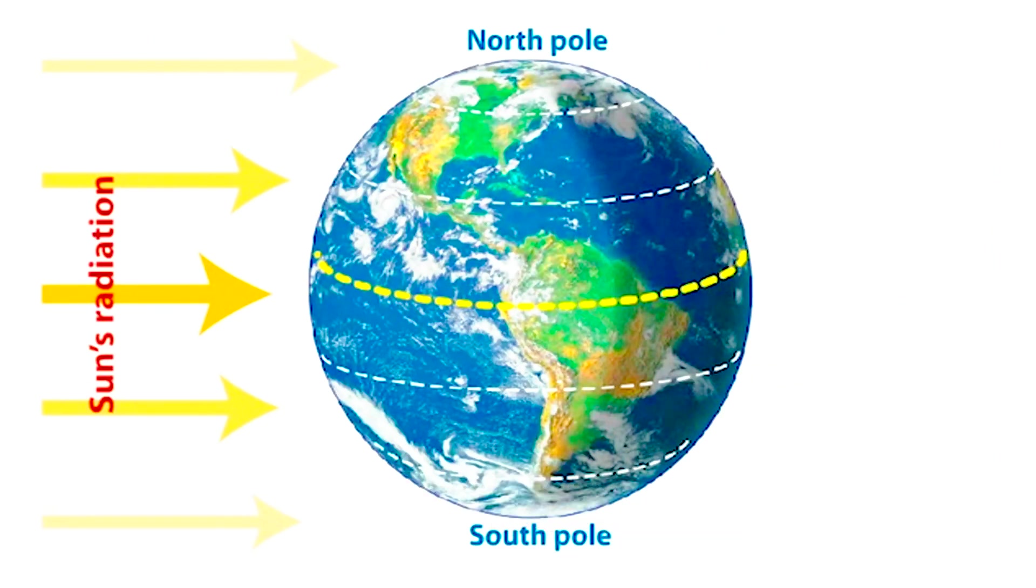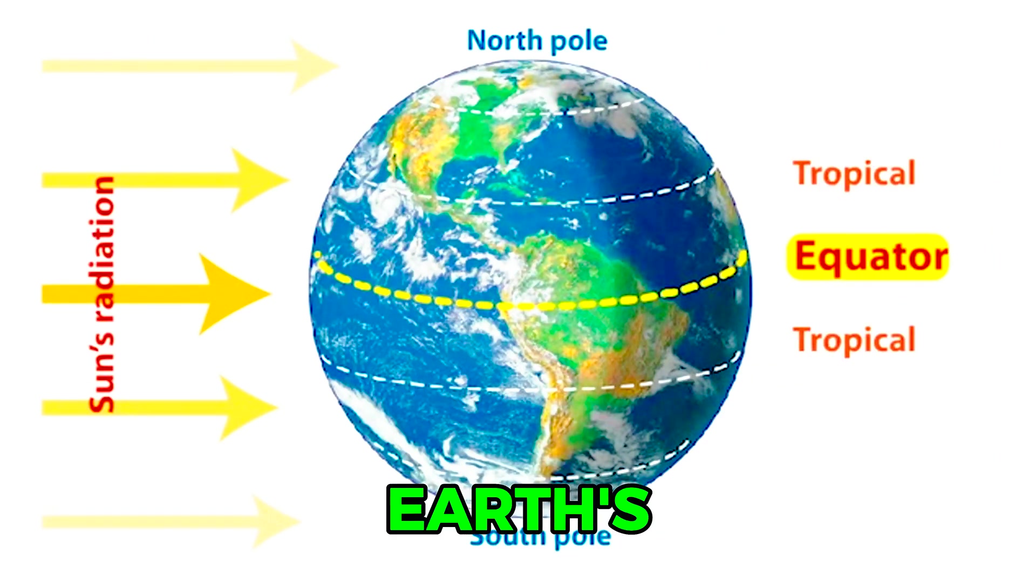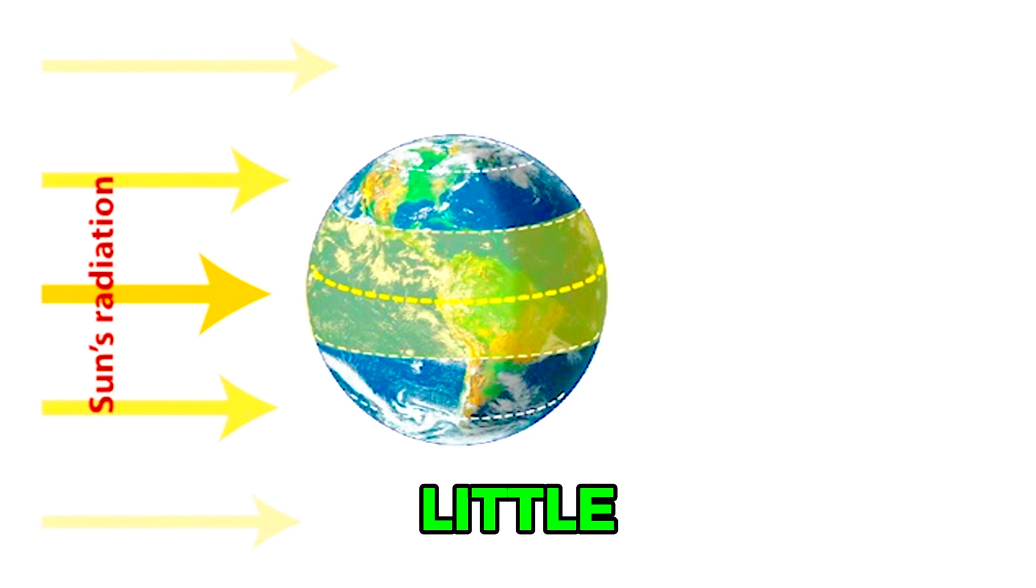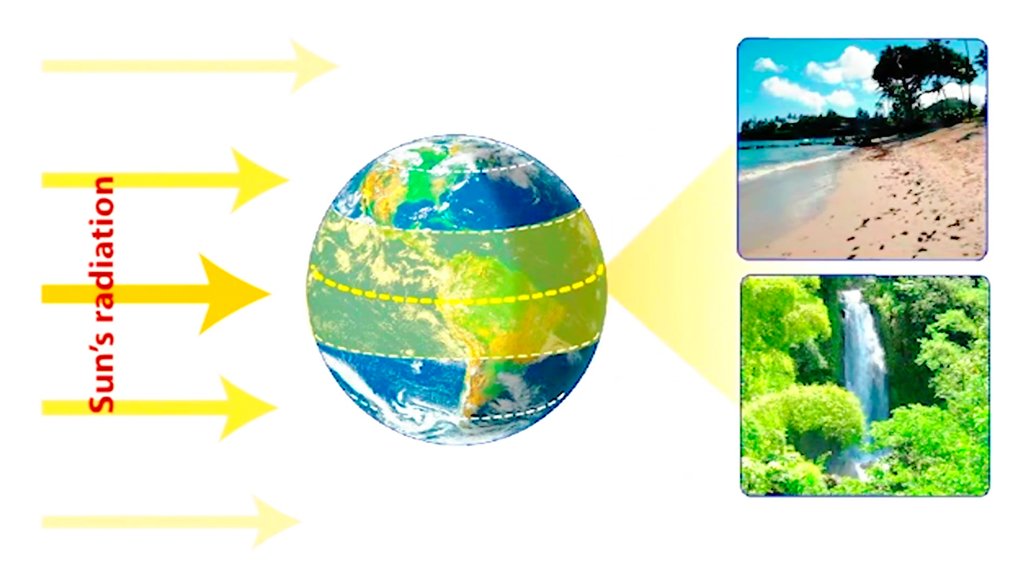Throughout the year, the tropical regions near the Earth's equator receive fairly direct sunlight. These regions experience little variation in daylight hours and temperature. There is little or no change in seasons in the tropics.